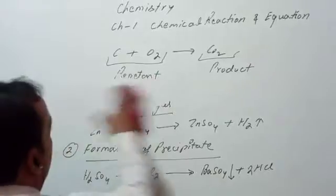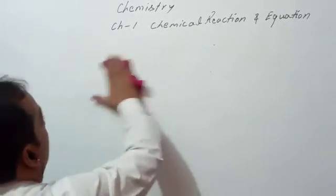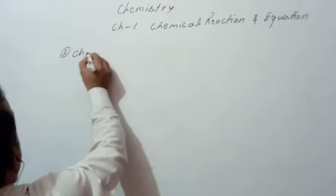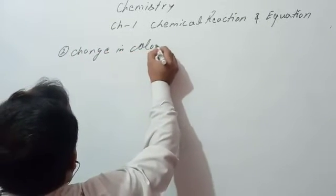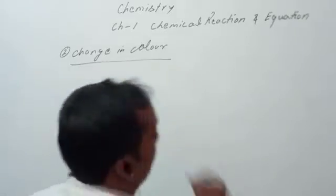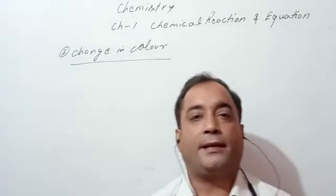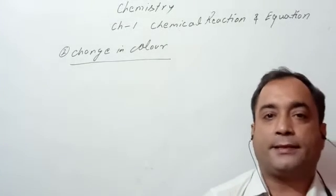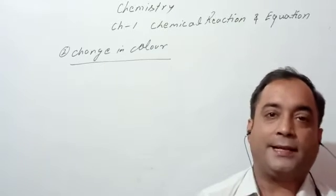Now, next characteristic is change in color. We see potassium permanganate, KMnO4, this color is purple. If we add citric acid, citric acid means lemon, it will become colorless.